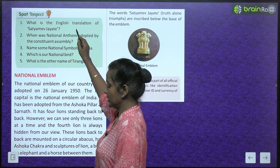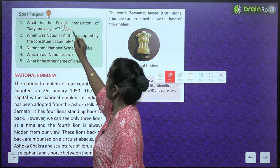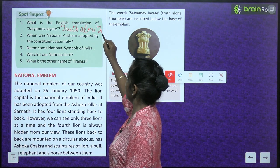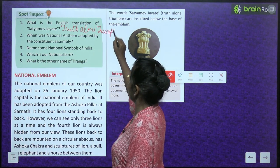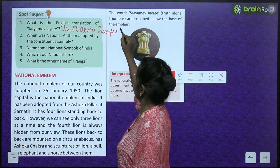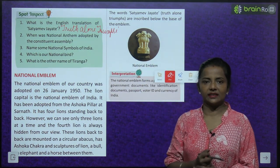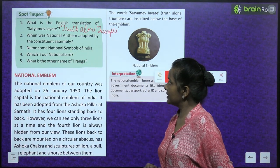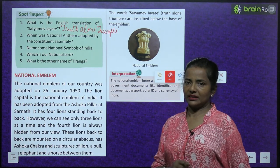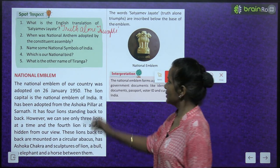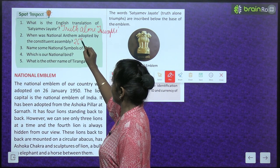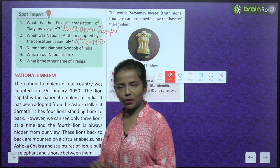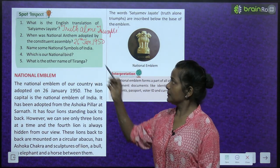The English translation of Satyameva Jayate is 'Truth Alone Triumphs,' meaning truth always wins. The national anthem was adopted by the Constituent Assembly on 26th January 1950.